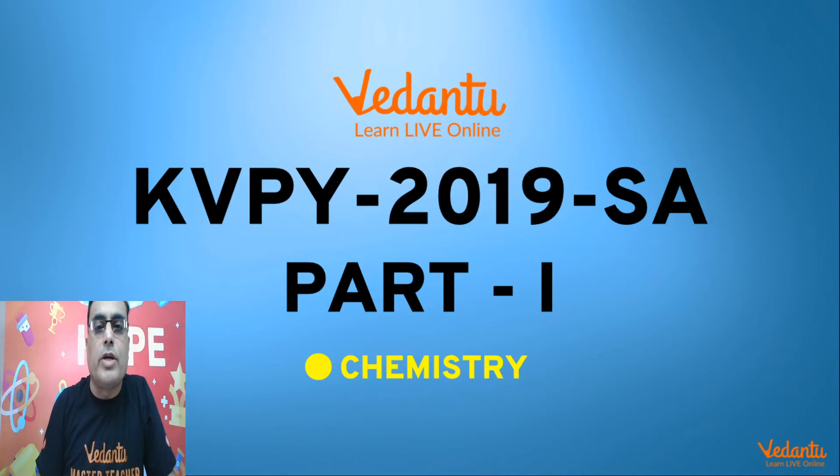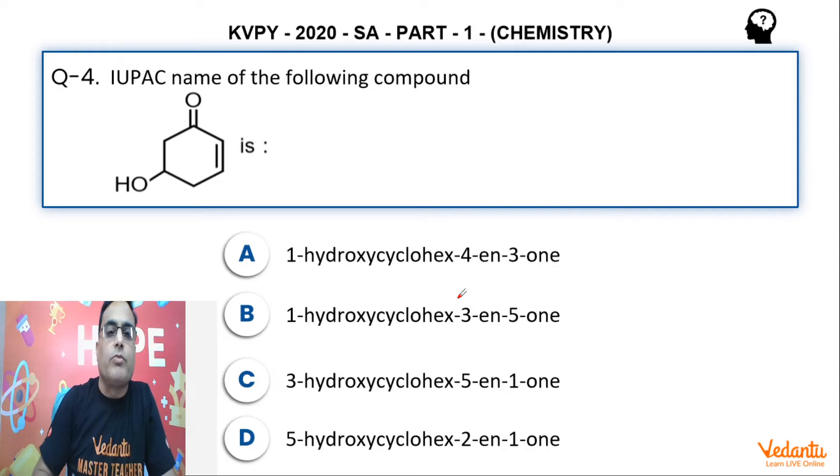Hello guys, I am Vinay Pandey and let us solve KVPY 2019 SA Part 1 Chemistry, Question Number 4. The question says, IUPAC name of the following compound is,